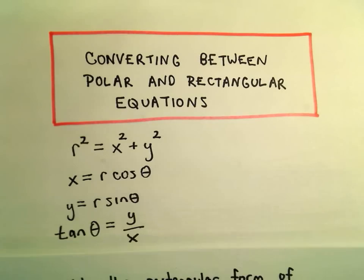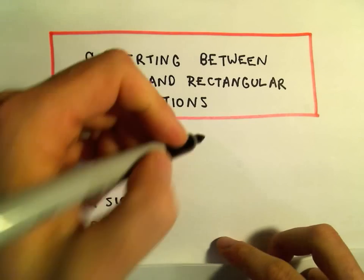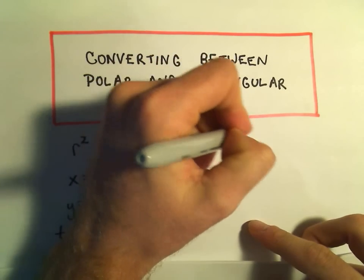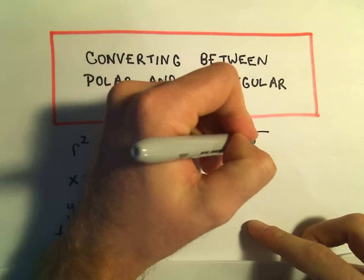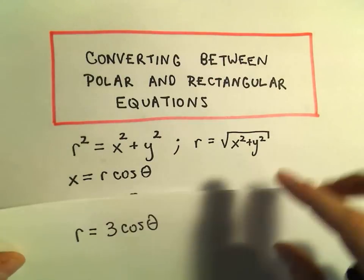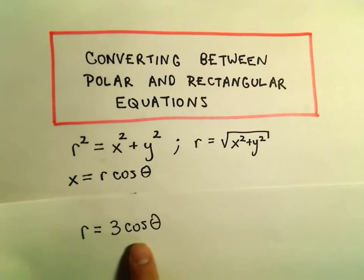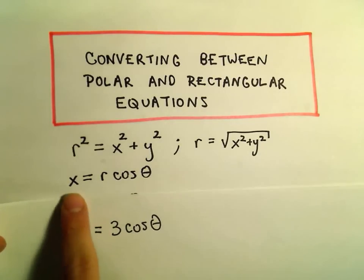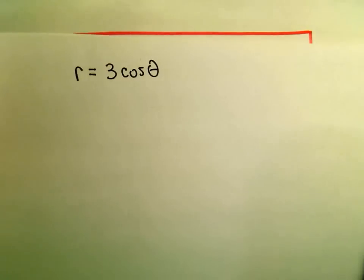We could solve for r on the left. We could have that r equals the square root of x squared plus y squared. But the problem is, if I plug that on the left, I still don't know what to plug in on the right. If only there was an extra r hanging out on the right, we would have r cosine theta, and then I could replace that with an x.